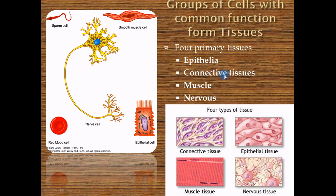Connective tissue is the 'other' category — it does lots of things. Blood is not a sheet-like covering, not there for contraction or long-distance electrical communication, so it's connective tissue. Bone gives a framework or structure and is also connective tissue. Fat falls under connective tissue too. Those are the four primary types of tissues — epithelium, muscle, nervous, and connective — which we'll talk about in more detail in the next chapter.